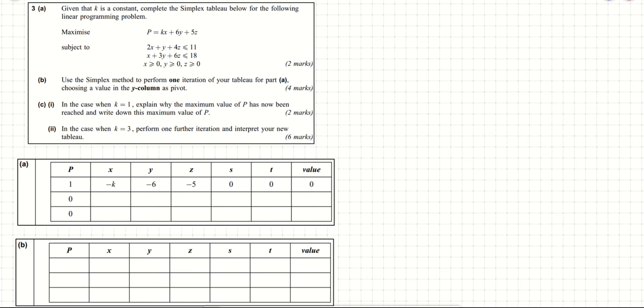Part A asks us to complete the simplex table. We have a partially completed simplex table where the first row is already filled in, representing the objective function p equals kx plus 6y plus 5z. In the simplex tableau we write that as a 1 under p, minus k under x, minus 6 under y, and minus 5 under z.